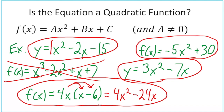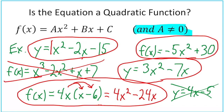What if we have y = 4x - 5? That clearly is not quadratic — that is a line. We could write it as y = 0x² + 4x - 5, but it's not quadratic if the a value is 0. That's why the rule exists that a cannot equal zero.